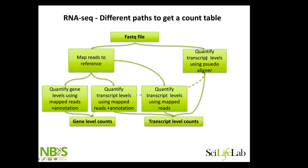There are also some tools where you align directly to the transcriptome. Quite often you would use pseudo-aligners for these, like Kallisto or Salmon. These pipelines have the advantage that they're fast and not so memory-intensive as mapping to the full genome. Also, in some projects we work with non-model organisms where we only have a transcriptome of that species, and then that's the only path you can take.